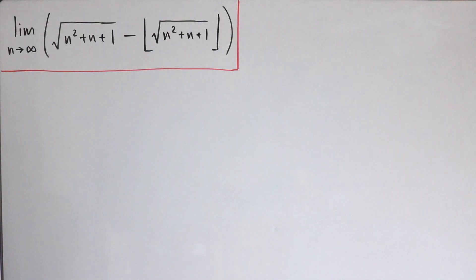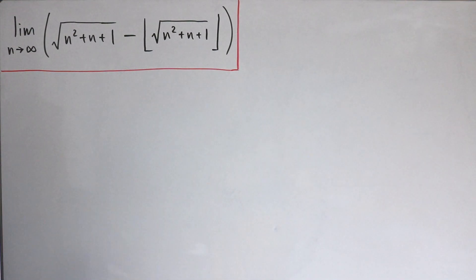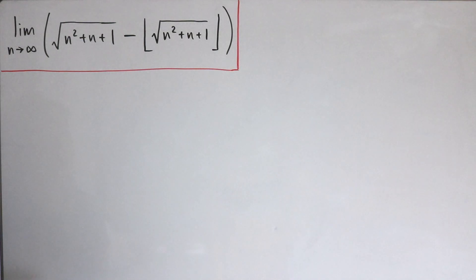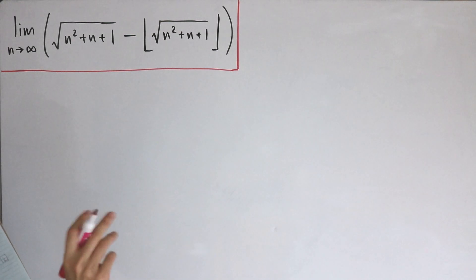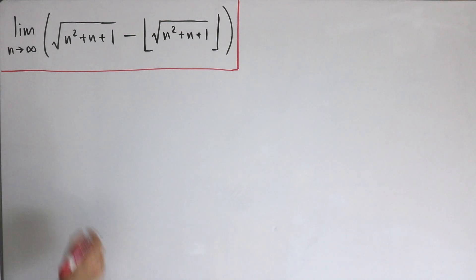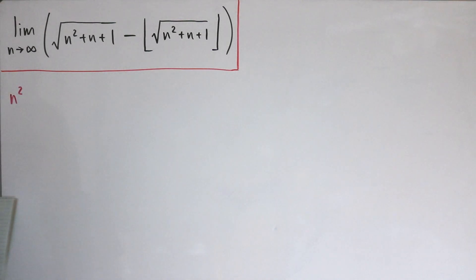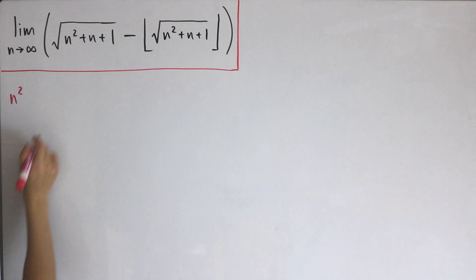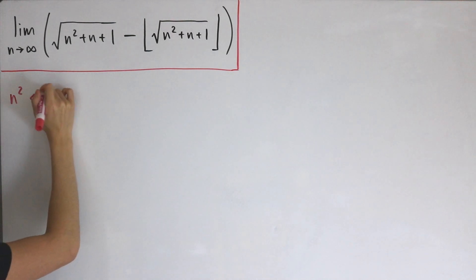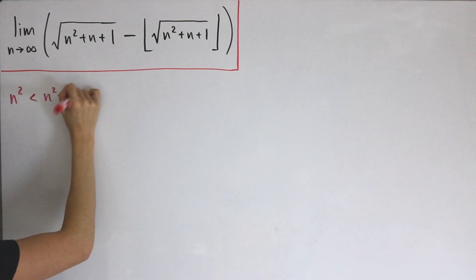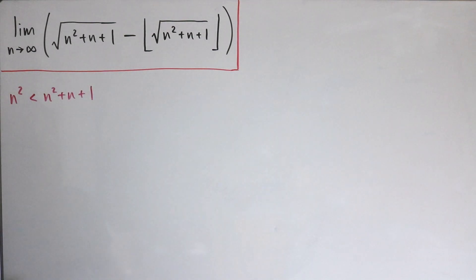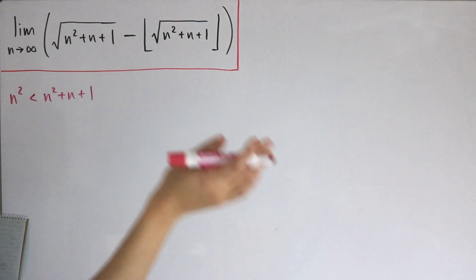The inequality we'll be dealing with isn't something justified in the standard way you learn from school when dealing with inequalities. This is more of a creative approach. We'll start with n squared, and I'll create a lower bound — n squared is strictly less than n squared plus n plus 1. You just have to think a little bit outside the box here.